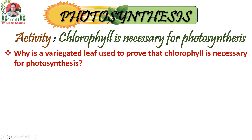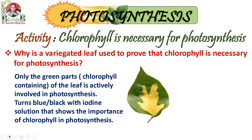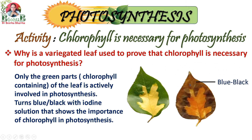Why is a variegated leaf used to prove that chlorophyll is necessary for photosynthesis? This is done to kill two birds with one stone. A variegated leaf has green and non-green parts. The green part contains chlorophyll and the non-green part has some other pigments. When we subject a variegated leaf to the iodine test, the green part turns blue-black, showing the presence of starch, which is a secondary product of photosynthesis and can only be produced by chlorophyll.